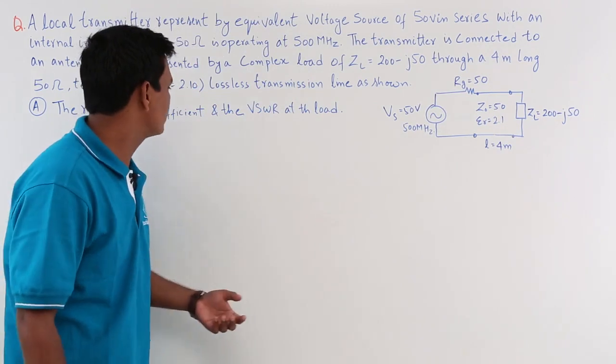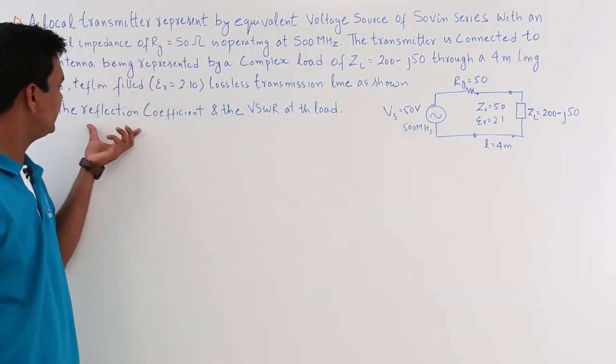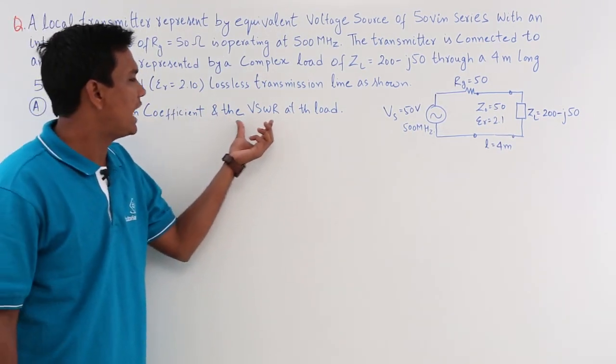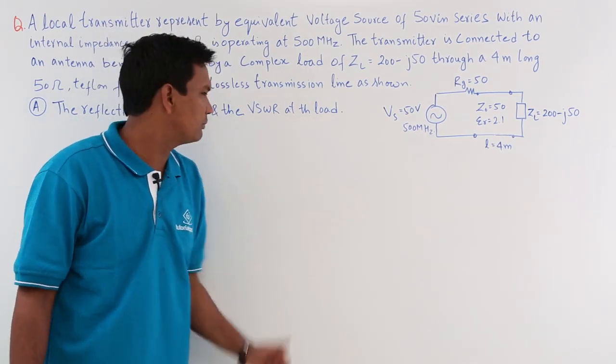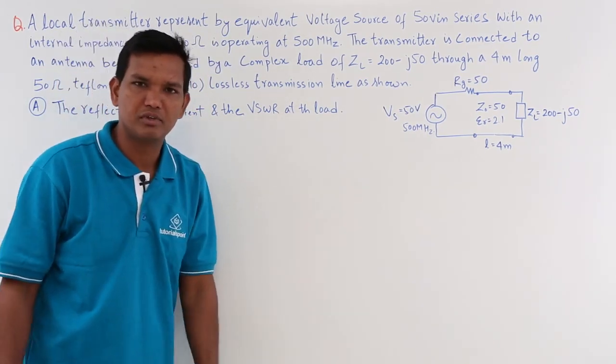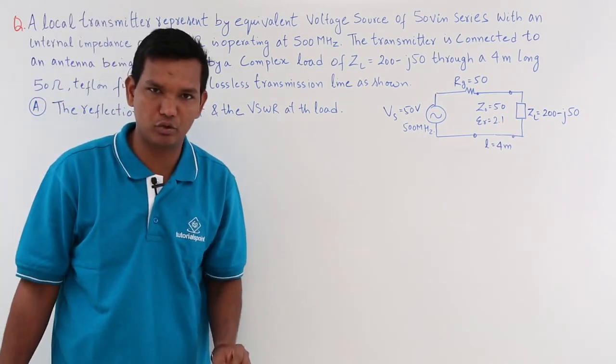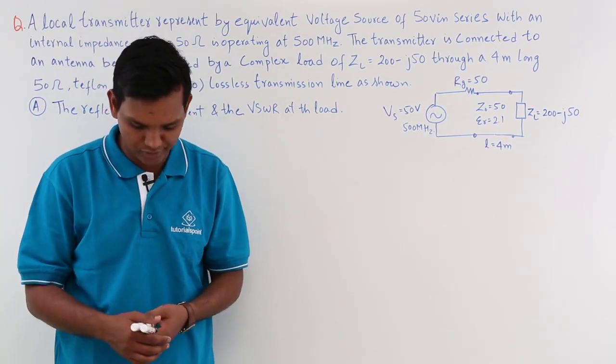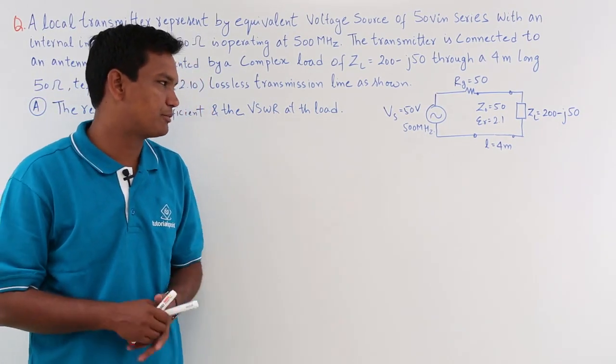The first part of the question says we have to find the reflection coefficient and the VSWR at the load. VSWR is voltage standing wave ratio. So the first part is finding the reflection coefficient and then the VSWR. Let us start solving this problem.